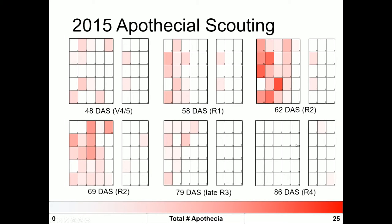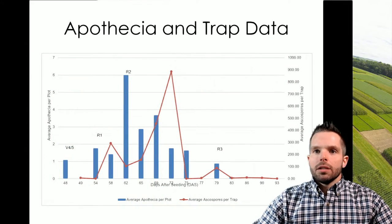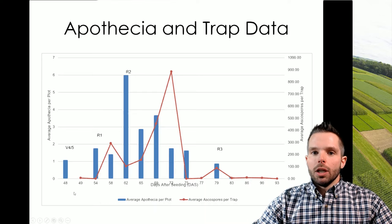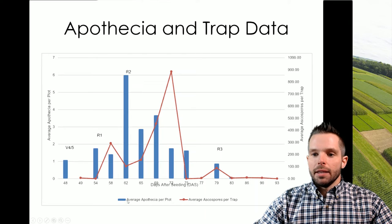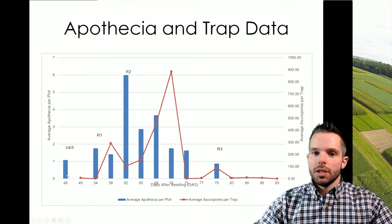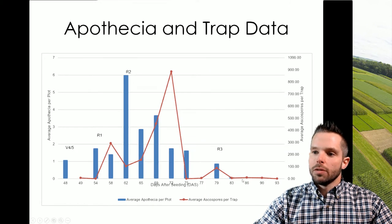By the time we get to R4, we don't have any apothecia in the field. Looking at the number of spores relative to apothecia: the blue bars indicate the average apothecia per plot, and the red line indicates the spores that erupt from those apothecia. As the number of apothecia increase, the number of spores we trap increase, and as the apothecia go away, the spores trapped go down to zero.